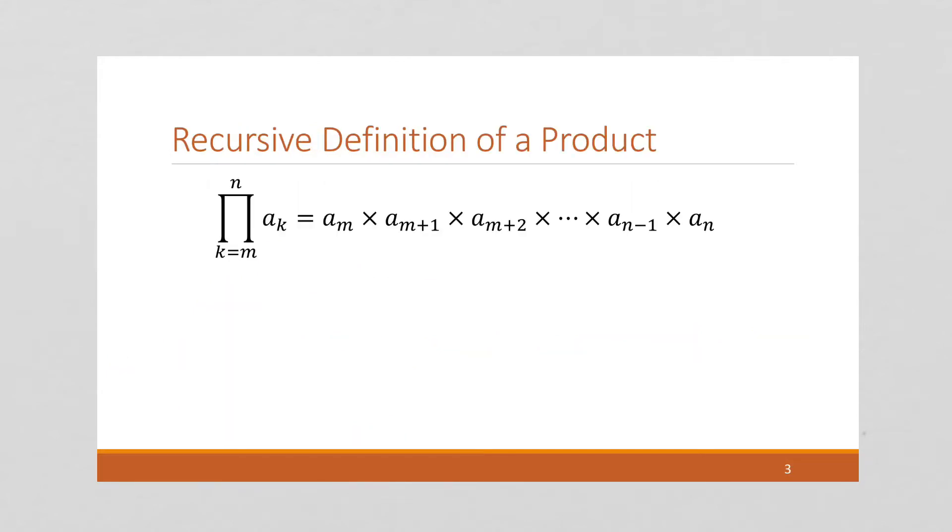And similarly to a summation, we can also provide a recursive definition of a product. So here is a product. And what I can do is I can gather those terms together and I can rewrite this. So this is the product. Now notice we're starting at M. But now we're going to N minus 1.